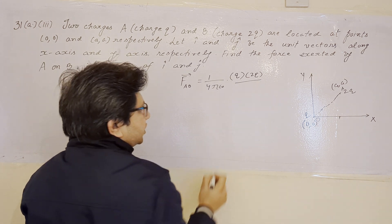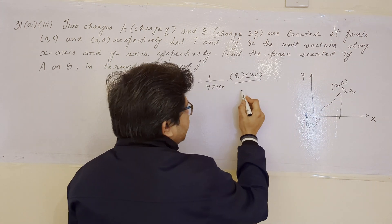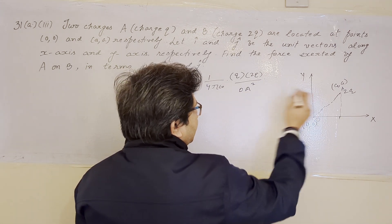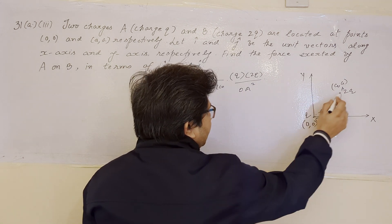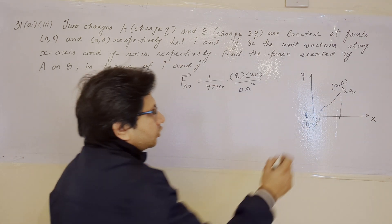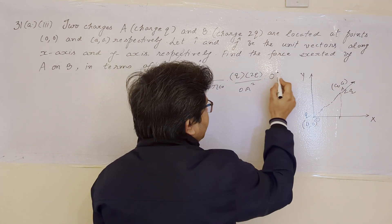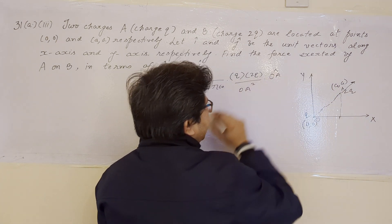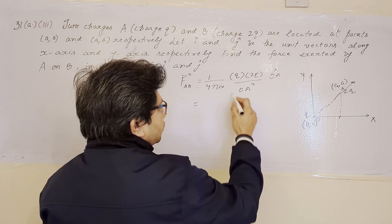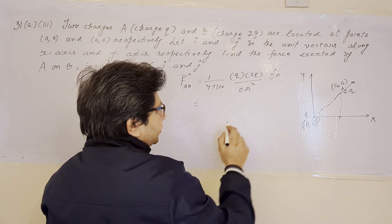The expression continues: 2q divided by OA squared — the distance between the charges — multiplied by the unit vector OA cap. Since both charges are positive, the force is directed along OA. We now find the distance OA as well as the unit vector OA cap.